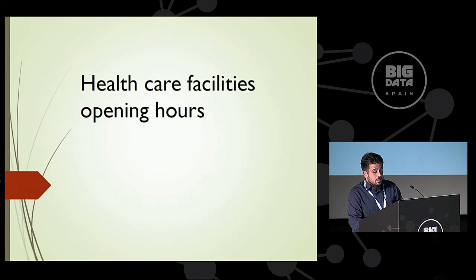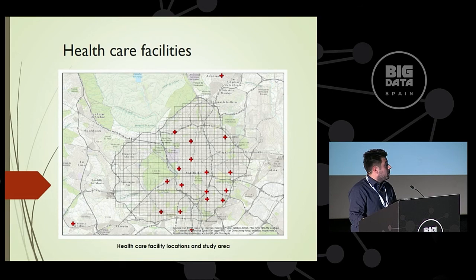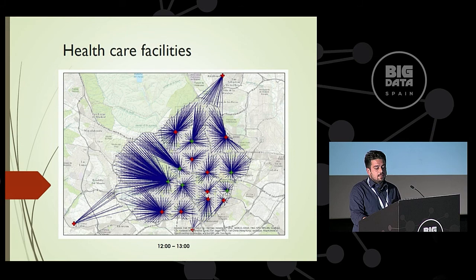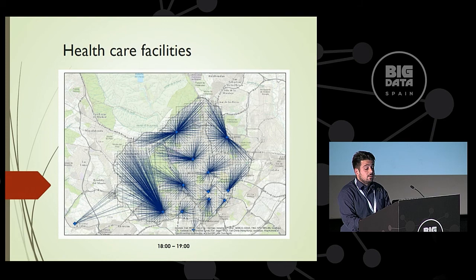About healthcare facilities' opening hours: here on this map we can see the city of Madrid, and the red points represent specialised healthcare facilities in the city. If we analyse the situation during the early morning, for instance between 8 and 9, when some of these facilities are open, we have certain service areas. But the situation changes at lunchtime when there are new open facilities, and changes again in the late afternoon, because some facilities are closed and some are still open.